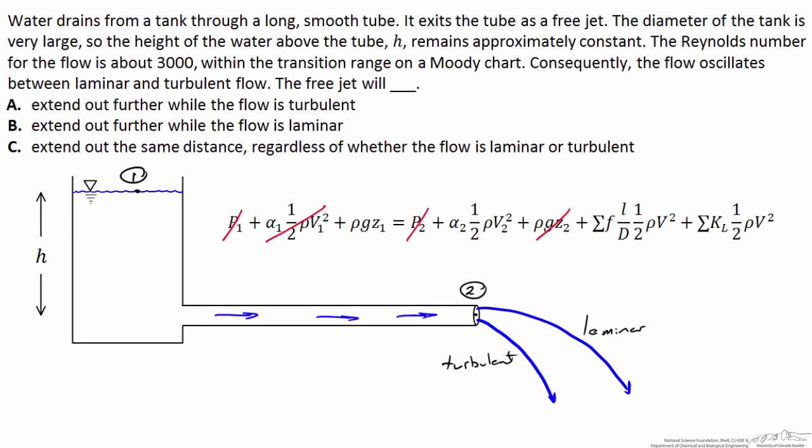Additionally, the velocity through the pipe that we ought to be using for the major loss is the same as the velocity at point two, so I'll draw subscript two here, and the same thing is true for the minor loss at the entrance of the tube.